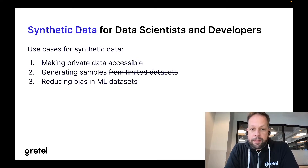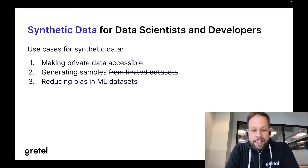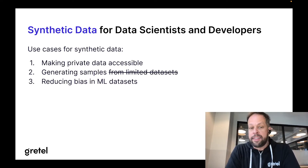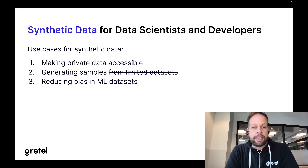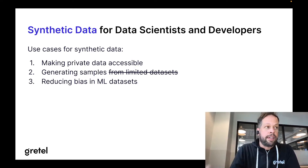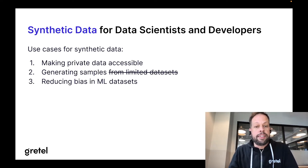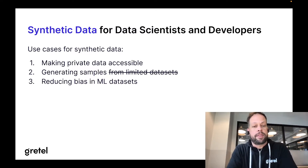Number two: generating samples from limited data sets. In the age of big data, it's surprising that no one seems to have enough of the right type of data. For example, if you're a machine learning researcher training a chatbot on utterances or commands from users, anytime there's a new type of utterance the model hasn't seen well before, the need to start from just a couple examples but generate a multitude of examples from that is a real challenge.